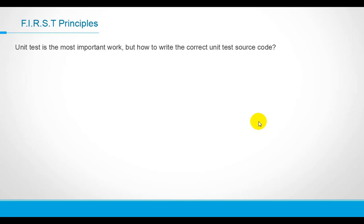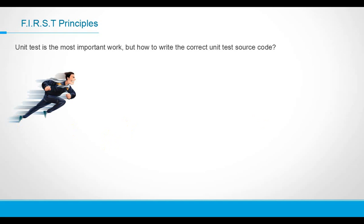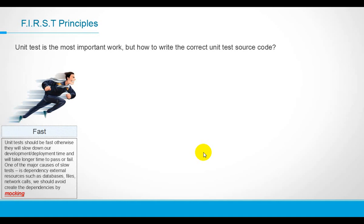But how do you write correct and reasonable unit test code? As a software developer, we have several principles to reference. Let me explain those principles one by one. The first principle is fast. Unit tests should be fast — if they are slow, they will slow down our development or deployment time. One of the major causes of slow tests is dependency on external resources such as databases, files, and network calls. We should avoid these dependencies directly by using mocking replacement.